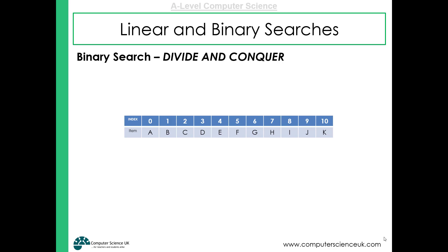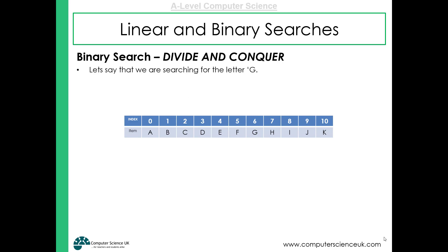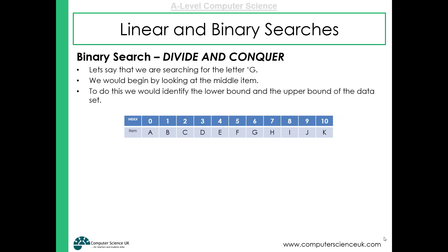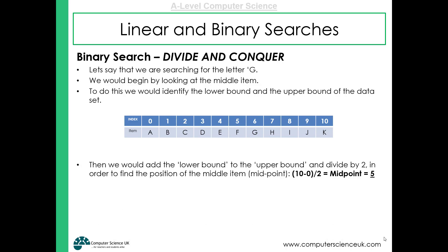Let's look at a visual example of the binary search. We're searching for the letter G, which is at index 6. In a binary search we look at the middle item. To find the middle item, we look at the lowest index (0) and the highest index (10) — the lower bound is 0 and the upper bound is 10. We add them together and divide by two to find our midpoint, which is 5. The binary search algorithm then looks at the item at position 5, which is the letter F.